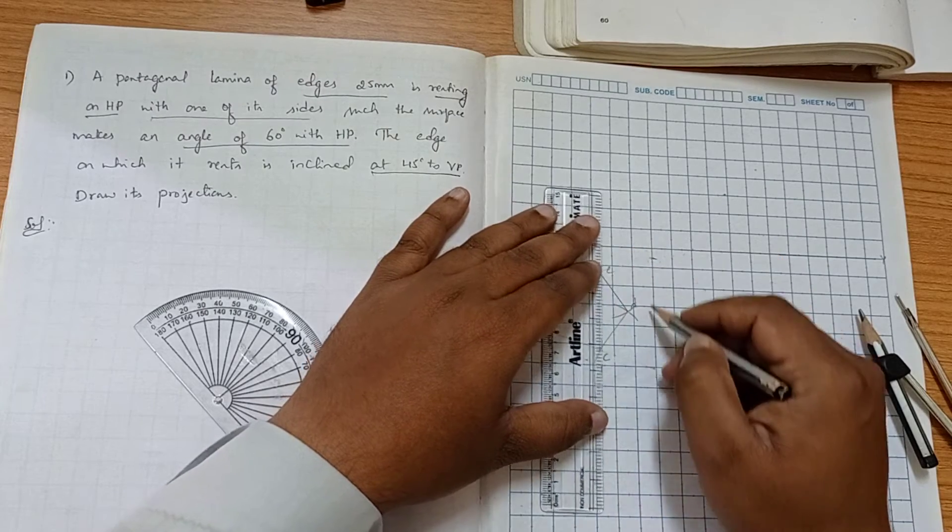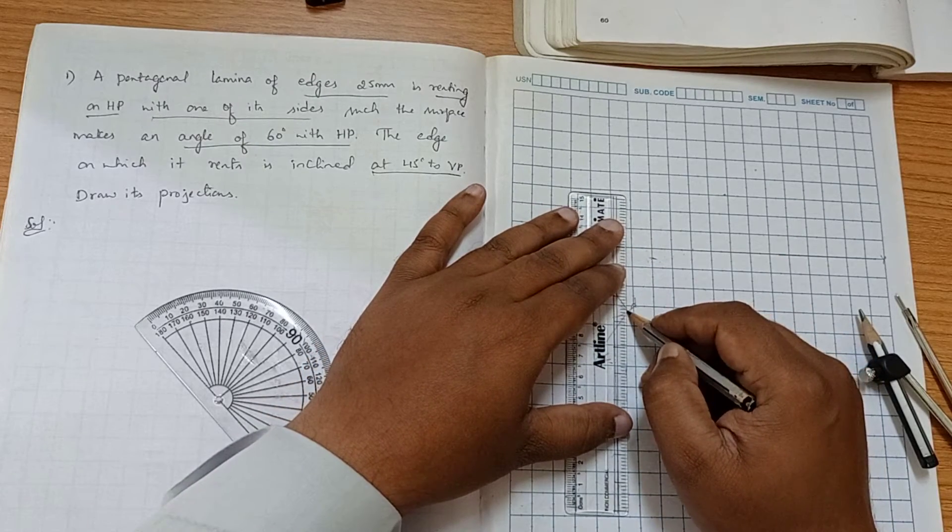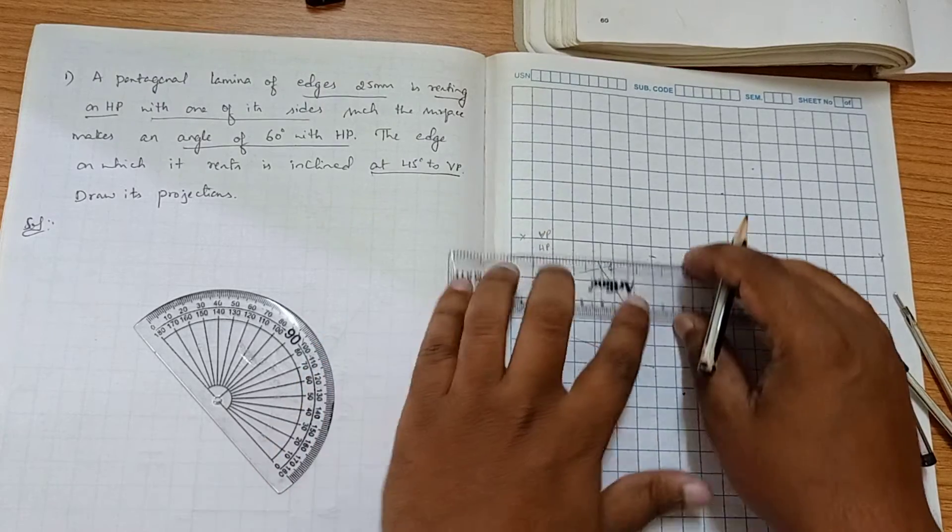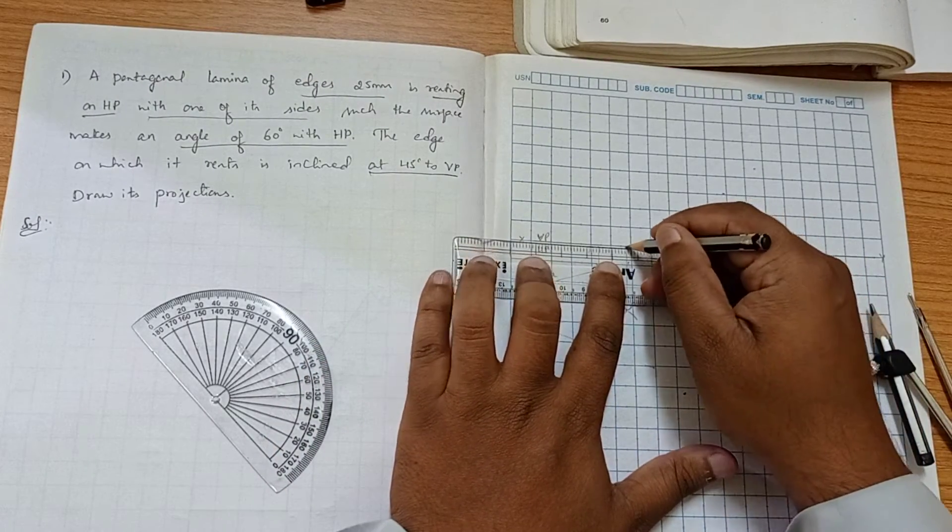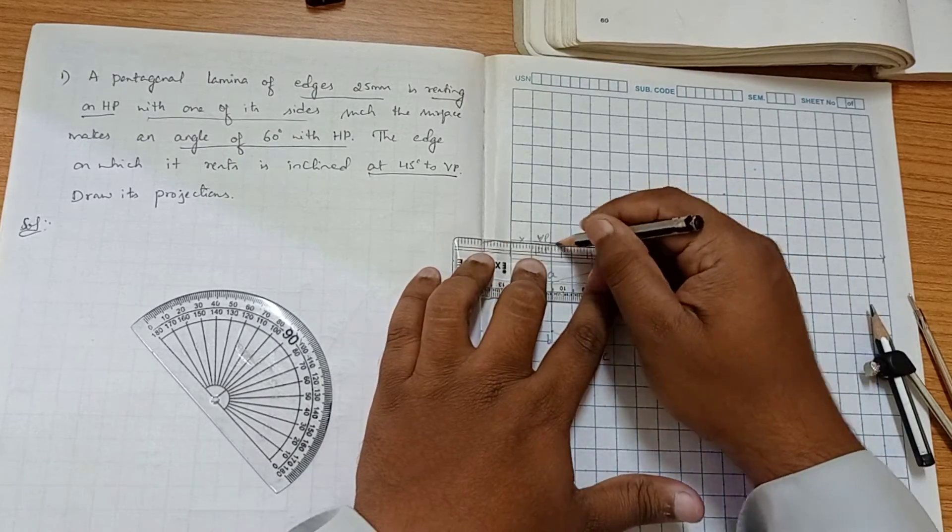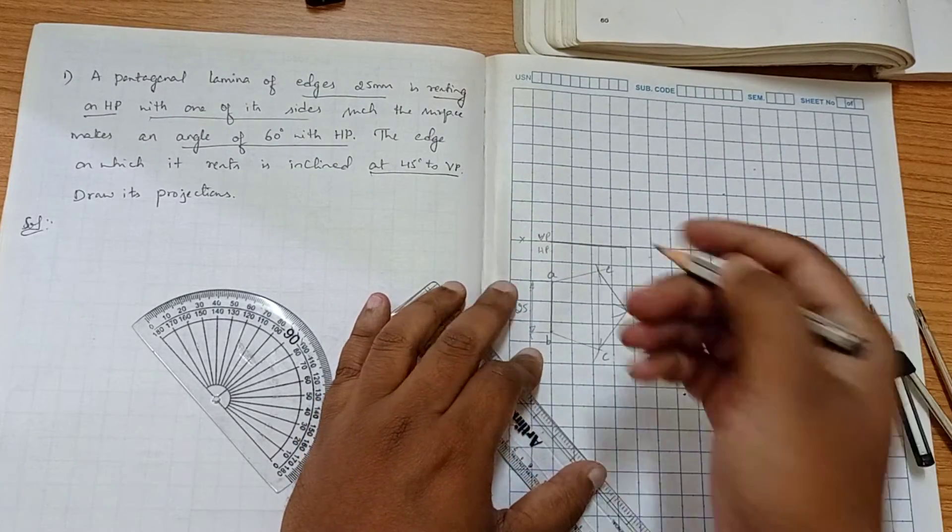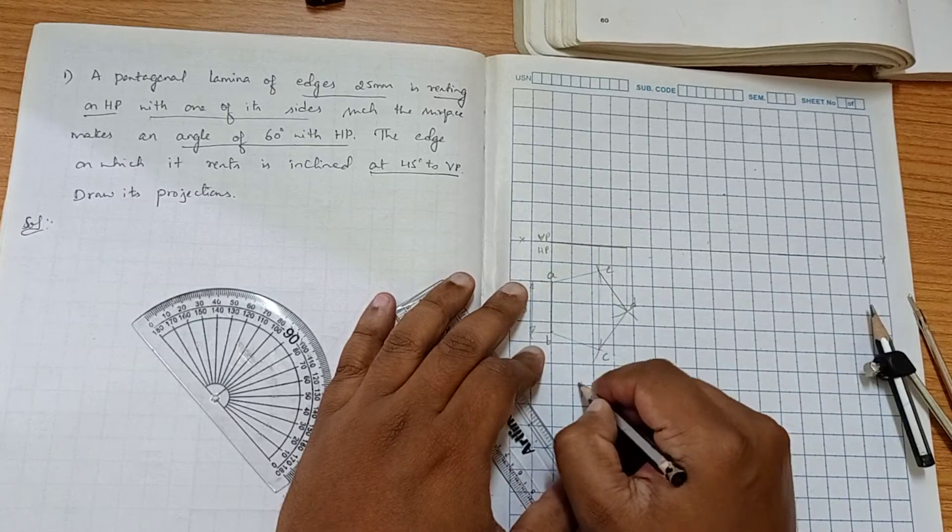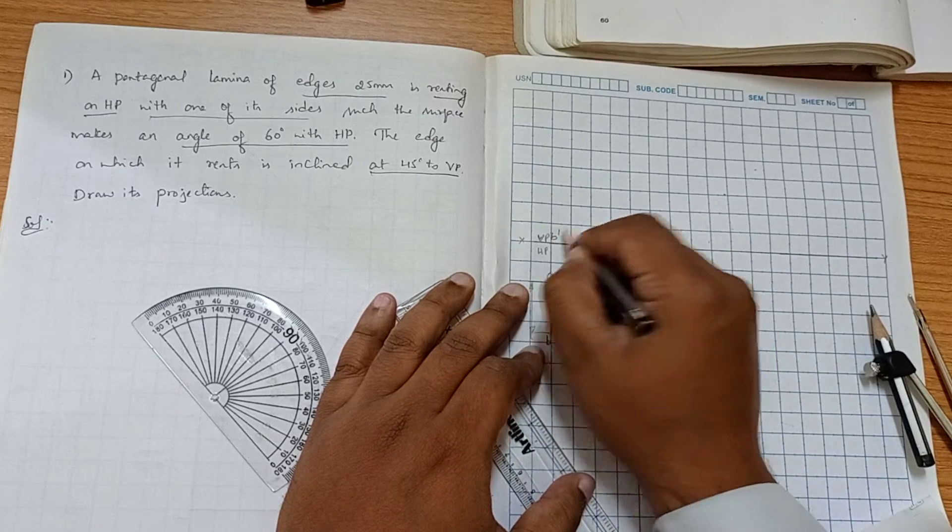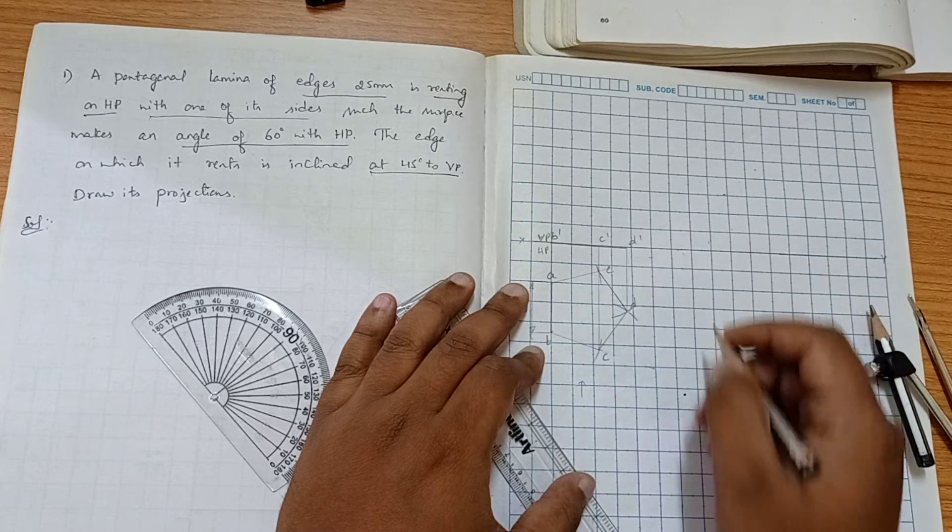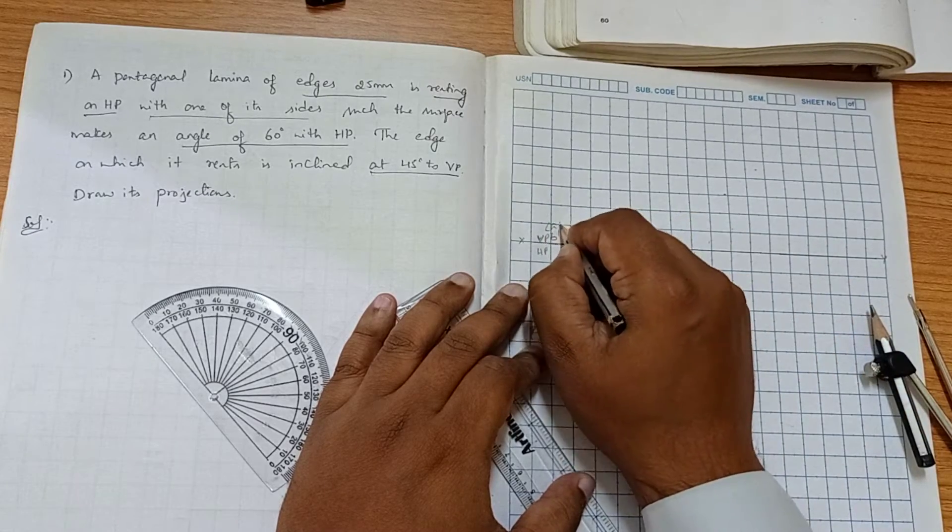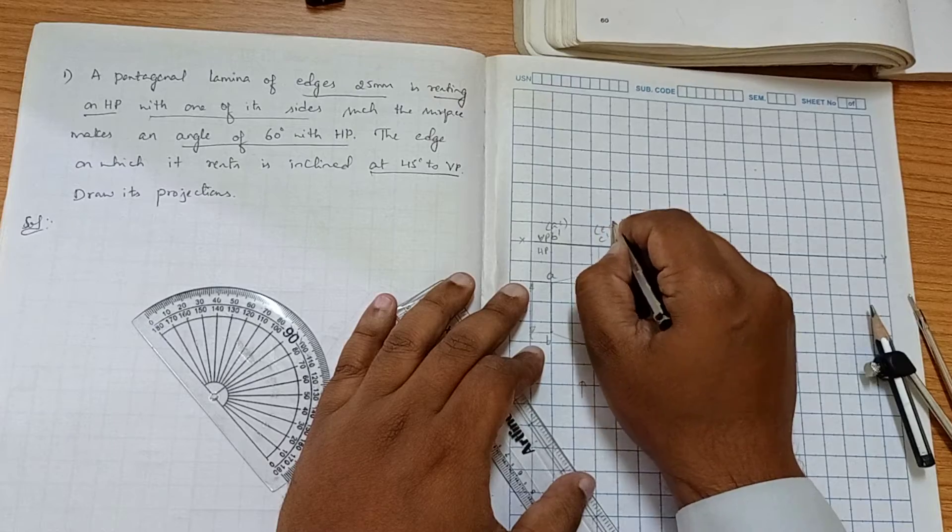Now we will draw the projection lines to construct the front view. So the front view is lying here on the xy line. Now we will write the notations. From the front view we are able to see B dash, C dash and D dash visible. But A dash and E dash not visible.